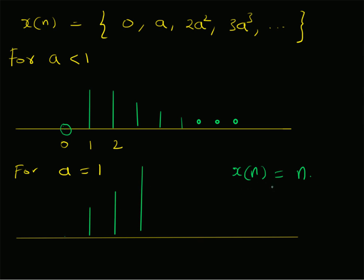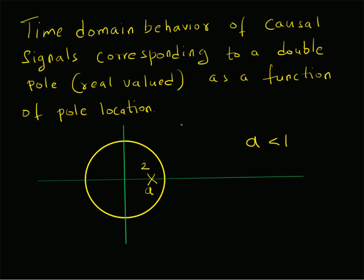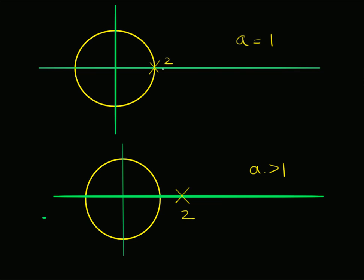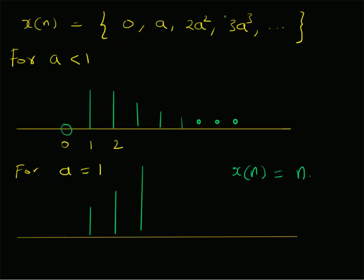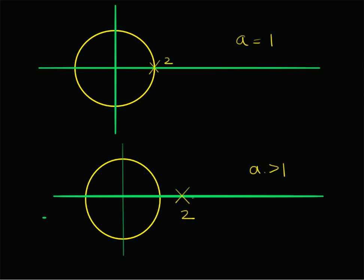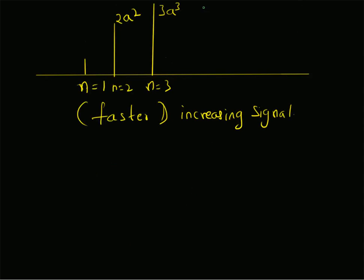To summarize, we looked at the time domain behavior of causal signals corresponding to a double real pole as a function of pole location. For poles inside the unit circle (a < 1), the signal decays with n. For poles on the unit circle (a = 1), the signal is x(n) = n, a linearly increasing function. For poles outside the unit circle (a > 1), the signal x(n) = n · aⁿ is non-linearly increasing and unstable. Thanks for watching.